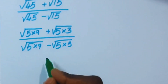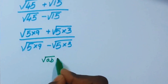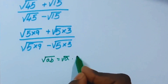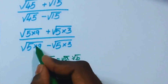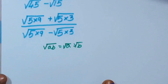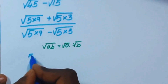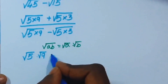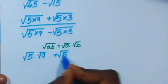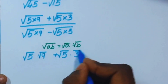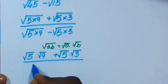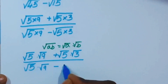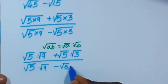Now we know this formula: square root of ab equals square root of a times square root of b. We are going to apply this formula here. So we'll get square root of 5 times square root of 9, plus square root of 5 times square root of 3, divided by square root of 5 times square root of 9, minus square root of 5 times square root of 3.